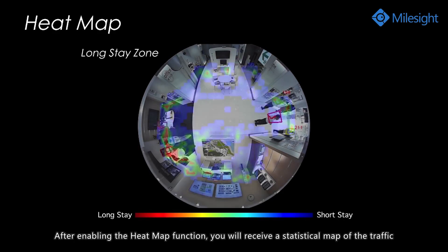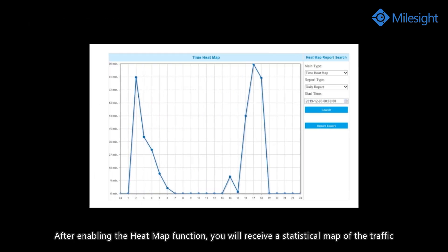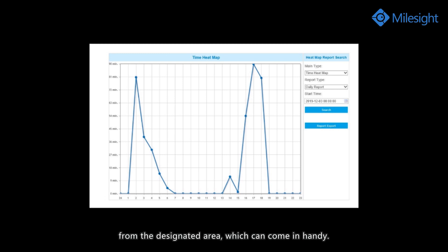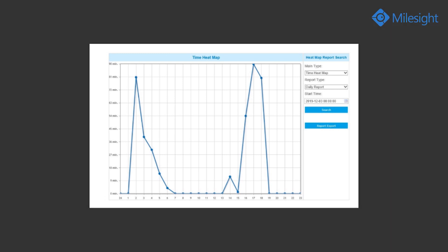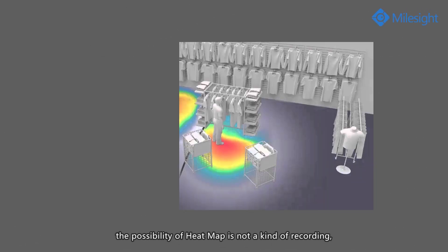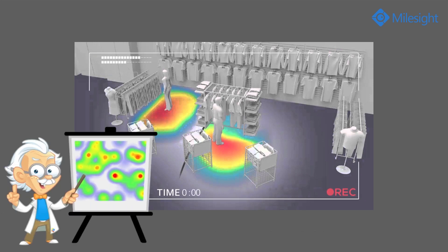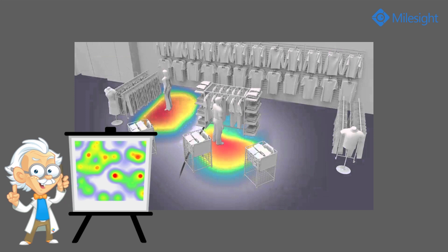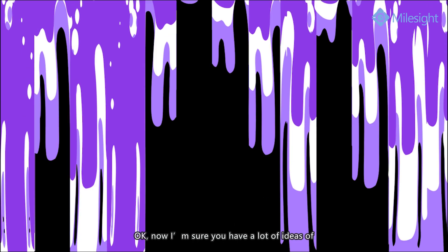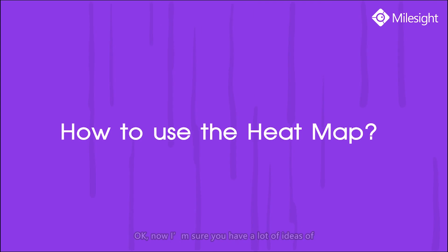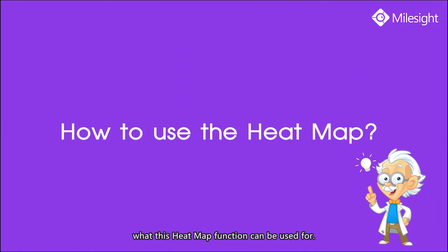After enabling the heatmap function, you will receive a statistic map of the traffic from the designated area, which can come in handy. We must also keep in mind that heatmap is not a kind of recording, but a video that provides us with appropriate traffic information from the monitoring area. Ok, now I'm sure you have a lot of ideas about what this heatmap function can be used for. We hope you enjoyed this video. For more information, please visit our website at www.milesight.com.